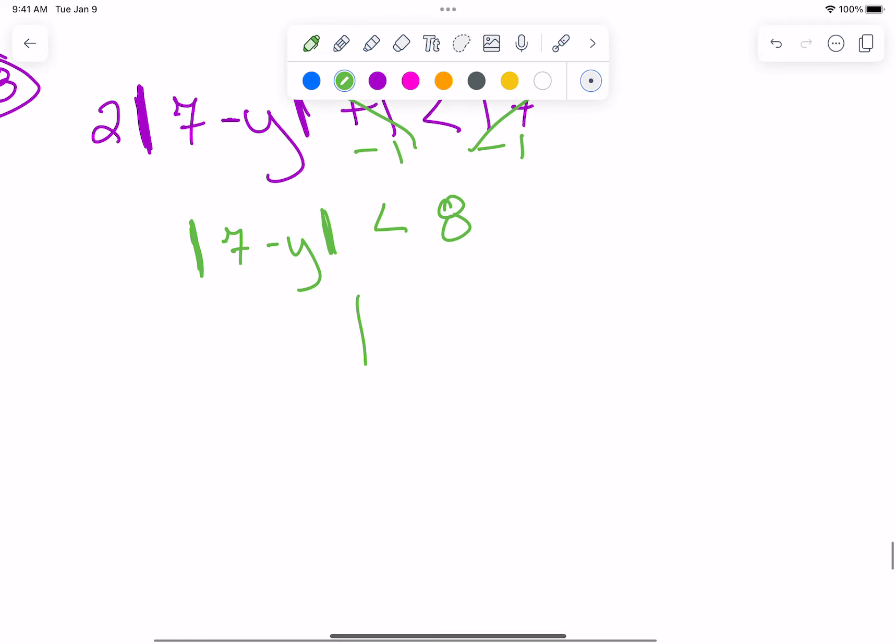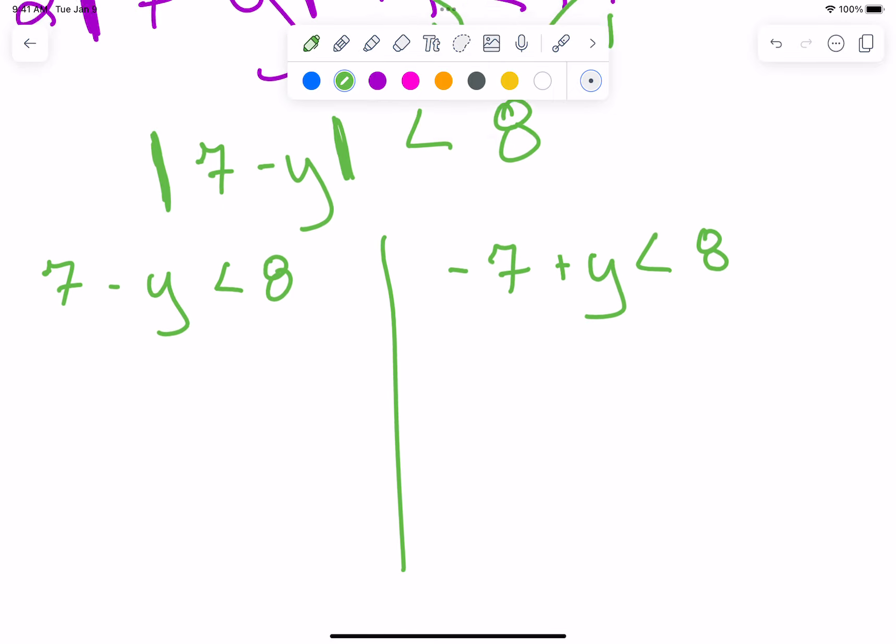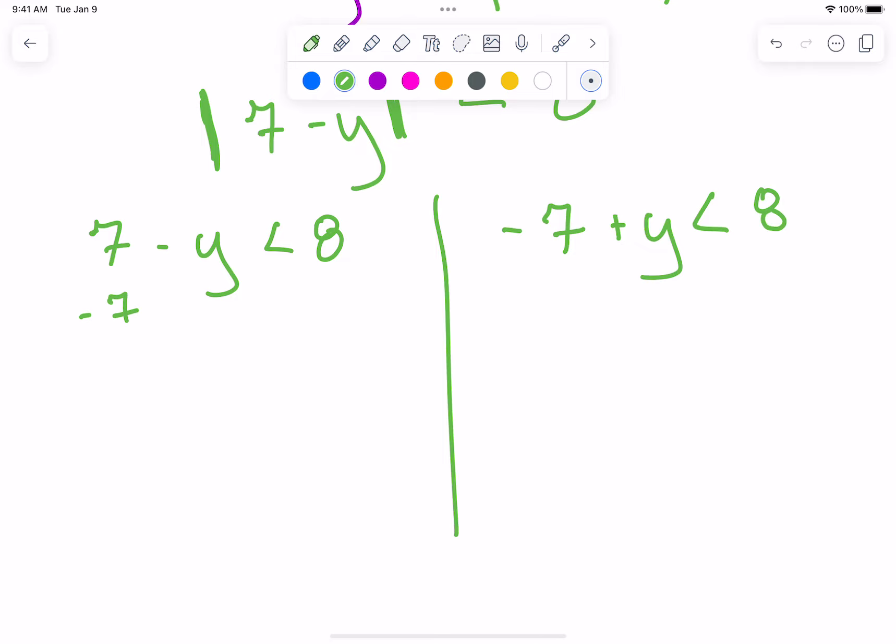Alright, now two cases: 7 minus y is less than 8, and negative 7 plus y is less than 8. So I'm going to subtract the 7. Negative y is less than 1, or positive y is greater than negative 1.